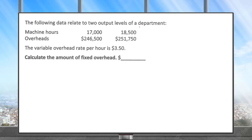The following data relate to two output levels of a department. They have given some machine hours and the overheads relevant for those machine hours. The variable overhead rate per hour is $3.5. Since it is given in the question, you are not required to find it using the hi-lo method.